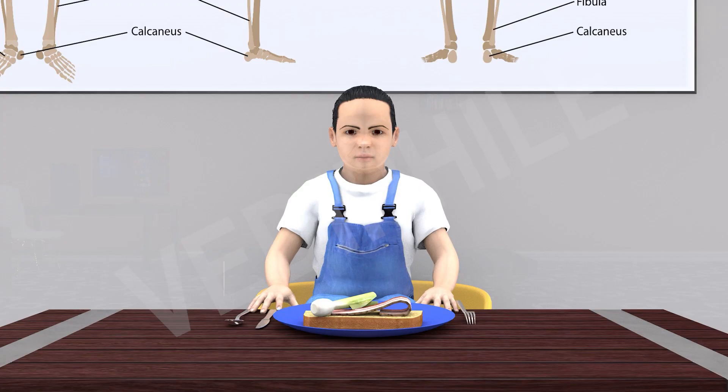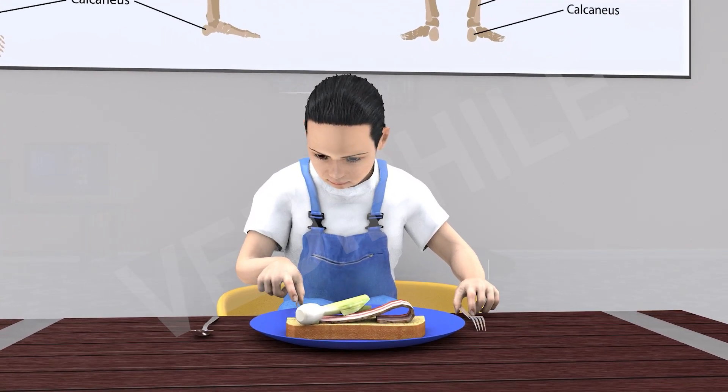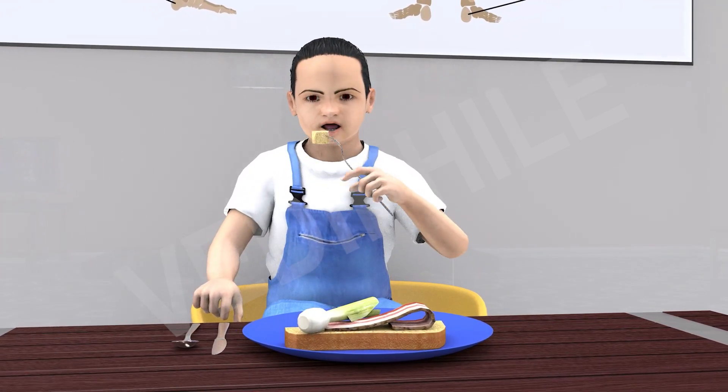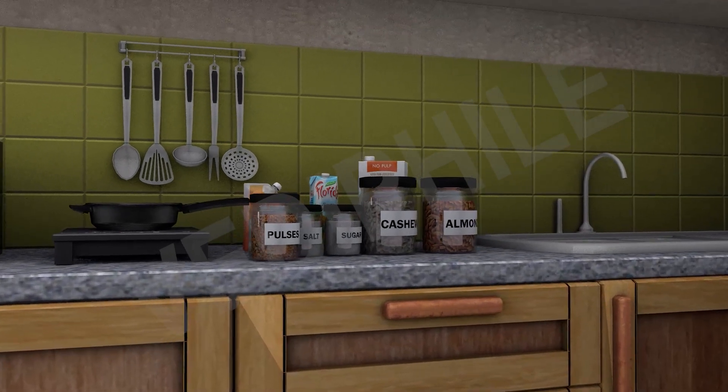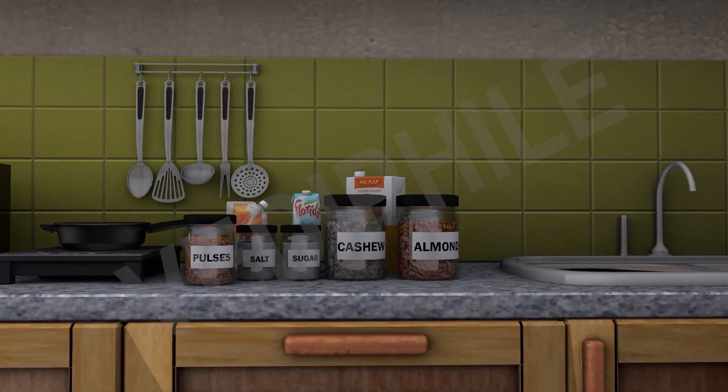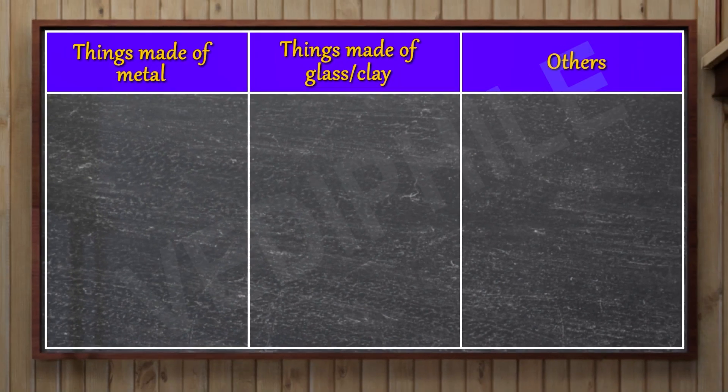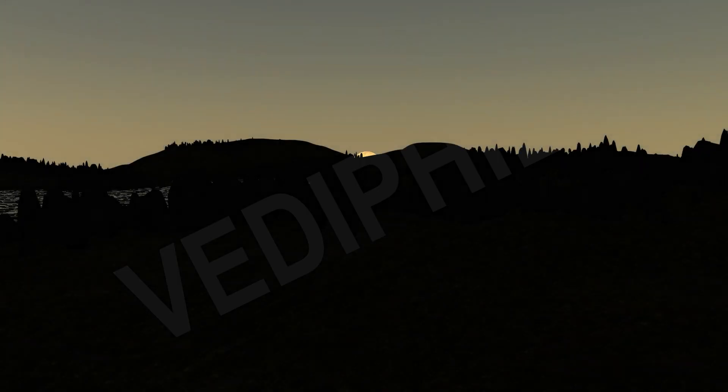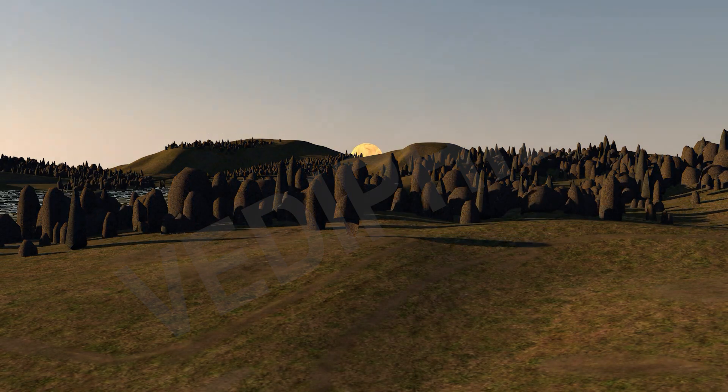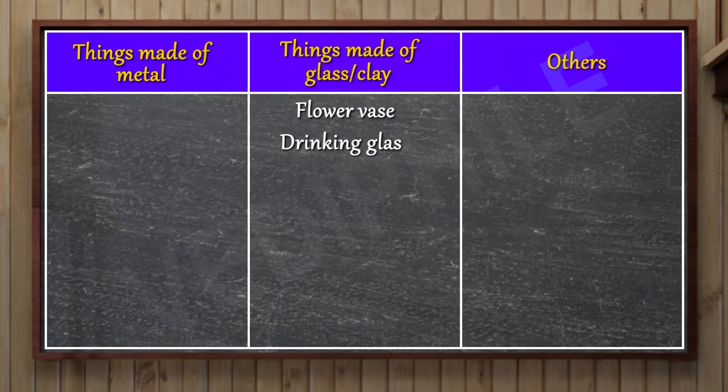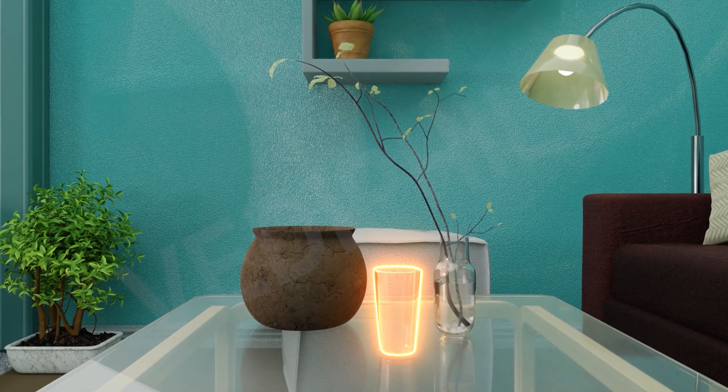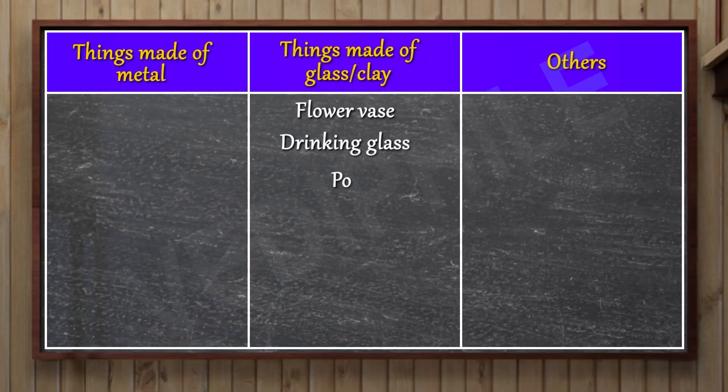We will see which objects are made of different materials. These are general examples of the items that we use or consume since the morning every day. Flower vase, drinking glass, this pot, scissors, key.